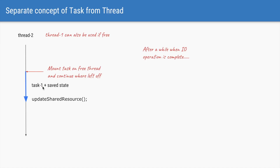The task continues from the location where it was blocked — not restarting, but resuming. It was blocked on the lock.lock operation, so it will now perform the next operation: update the shared resource. Using this concept of mounting and unmounting tasks, saving their state, and resuming from where they stopped, we achieve more efficient thread utilization. These tasks are known as coroutines, or in Java's case, Java Fibers.